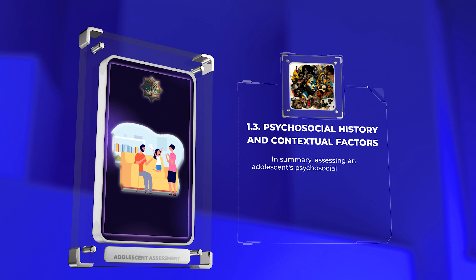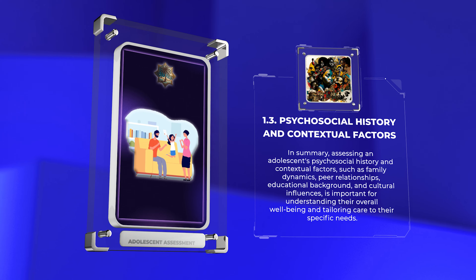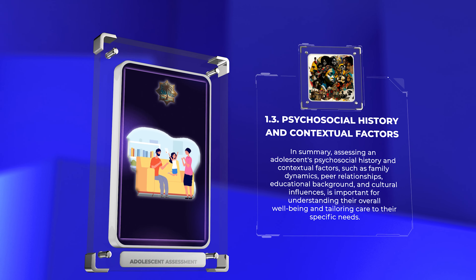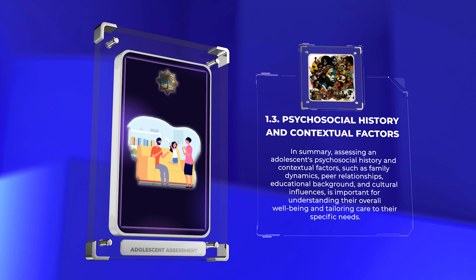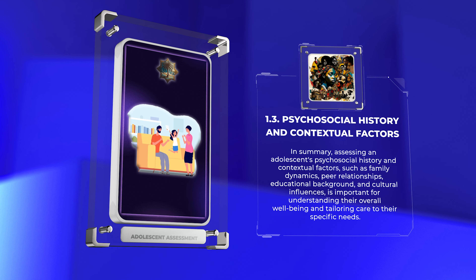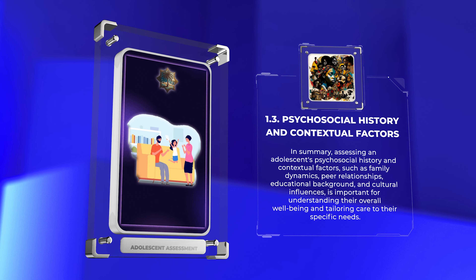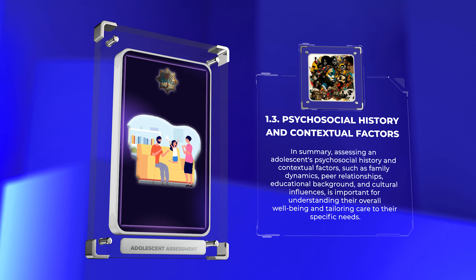Assessing an adolescent's psychosocial history and contextual factors — such as family dynamics, peer relationships, educational background, and cultural influences — is important for understanding their overall well-being and tailoring care to their specific needs.